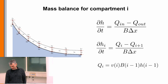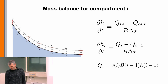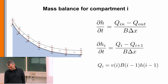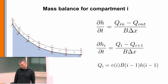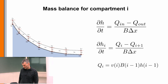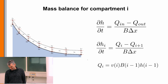We calculate the discharges: discharge is velocity times cross section times water height. For stability reasons we calculate the discharge at the boundary i of the compartment, taking the cross section at the inflow boundary of the compartment. This explains the i and i-1 indexing.